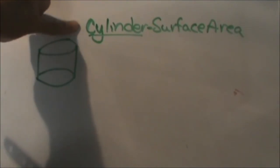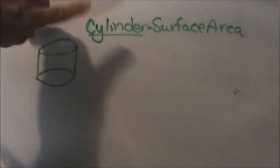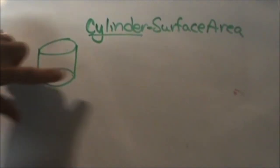Today we're going to look at how to find the surface area of a cylinder. Now there are actually two parts to the surface area of a cylinder.